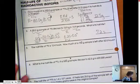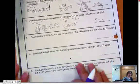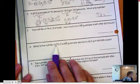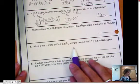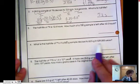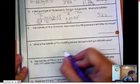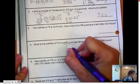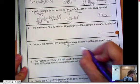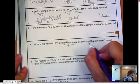Number 3 is pretty straightforward. Let's look at number 4. What's the half-life of Technetium-99 if a 500-gram sample decays to 62.5 grams in 639,000 years? So the initial amount is 500 grams. 62.5 is its amount remaining.